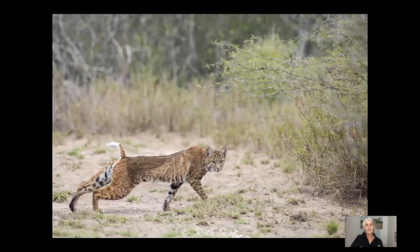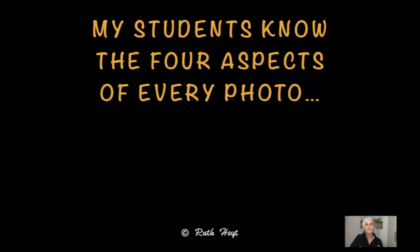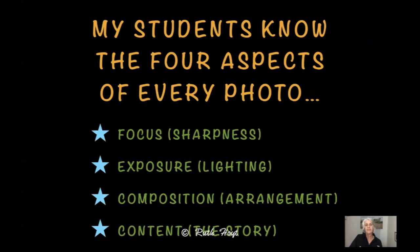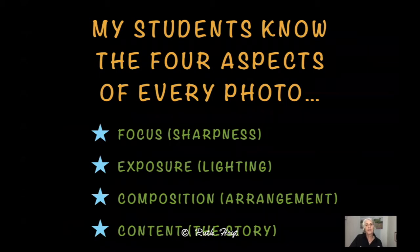Here we've got a bobcat stretching that was taken at the Santa Clara ranch a couple of years ago. I really like that shot. My students know the four aspects of every photo. That is to have your picture in focus — the sharpness — the exposure or the lighting, the composition or the arrangement of the subject within the frame, and then the content or the story that the photo tells.